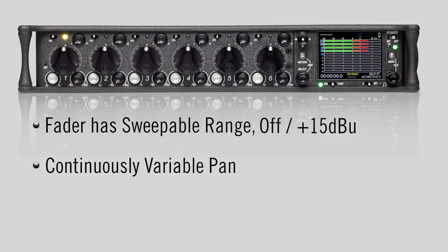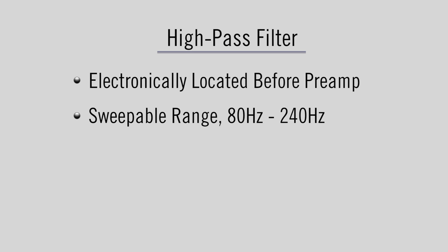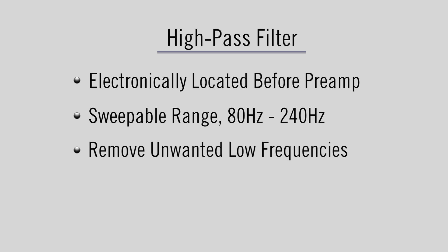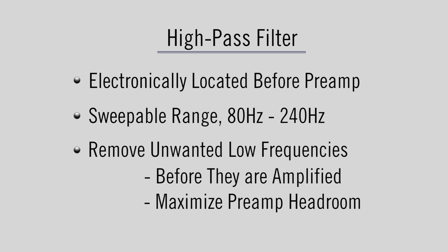Inputs also have continuously variable pan and high-pass filters. The high-pass filter is electronically located before the preamp and has a sweepable range from 80 Hz to 240 Hz. The high-pass provides the ability to remove unwanted low-end frequencies before they are amplified, to maximize preamp headroom.